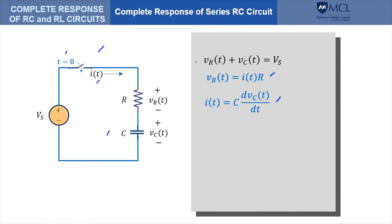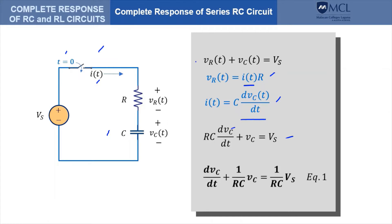We now replace the voltage across the resistance in terms of this. What we get is a differential equation in the variable V sub C. We can rearrange that differential equation to get a standard format. This is a first order differential equation, and to solve for V sub C, we need to solve this differential equation.